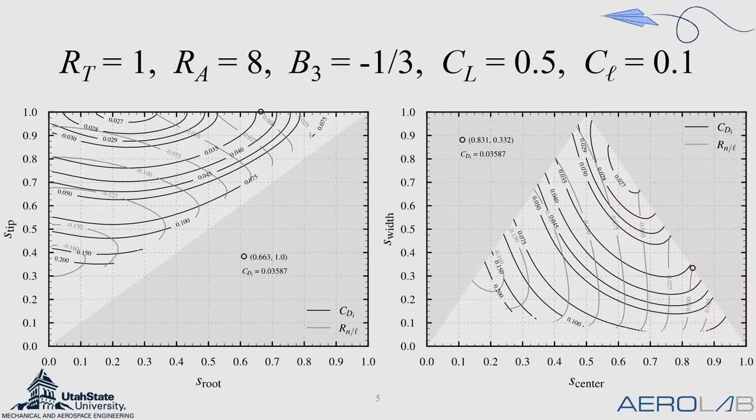Using these tools, we can determine how different aileron designs behave on a given wing planform and B3 lift distribution. For example, if we have a wing with a taper ratio of one, aspect ratio of eight, operating at the bell-shaped lift distribution with a lift coefficient of 0.5 and rolling moment coefficient of 0.1, we can get these results.